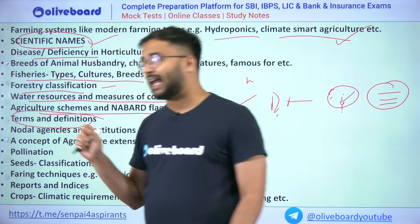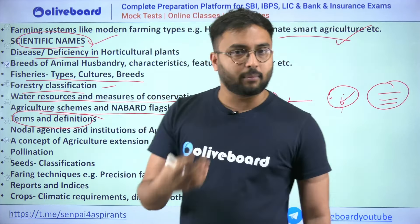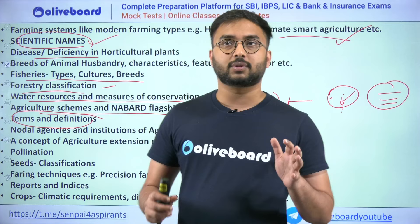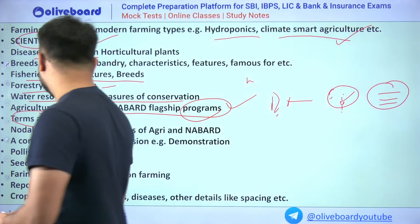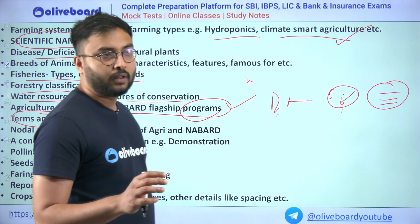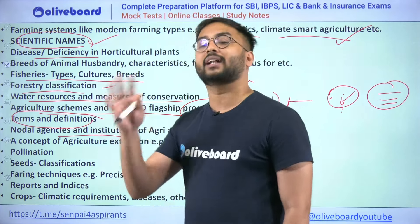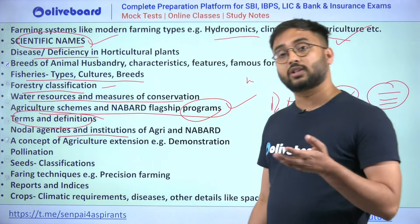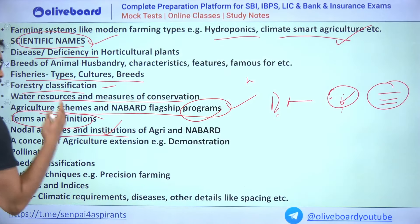Terms and definitions are very important in ARD. Certain terms have specific agricultural meanings that may be unfamiliar: chaffing, pruning, training, mulching — know these terms and their definitions. Nodal agencies and institutions of agriculture and NABARD are also very important. Know when ICAR was established, where specific ICAR institutes are located, and details of the Indian Agricultural Research Institute: when it was established, where it is located now, and where its headquarters are.